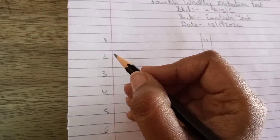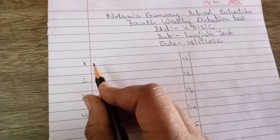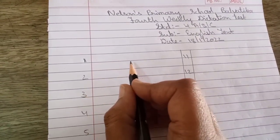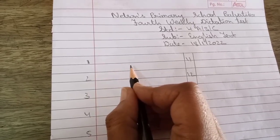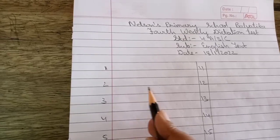So number one: obvious, obvious, obvious, obvious, obvious. Number two: unbelievable, unbelievable, unbelievable, unbelievable, unbelievable, unbelievable.